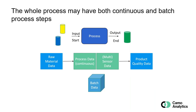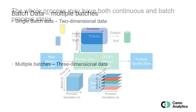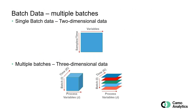If we look at the whole process, it might consist of various steps starting from raw material, then we have some continuous processes, maybe batch processes, and we have univariate sensors. Typically, a lot of implementations are also done with broadband channel instruments such as spectroscopy. And then at the end we have the final quality of our products. If you look at a single batch, it is a two-dimensional table, but for multiple batches we have three dimensions: batch, process variables, and time.